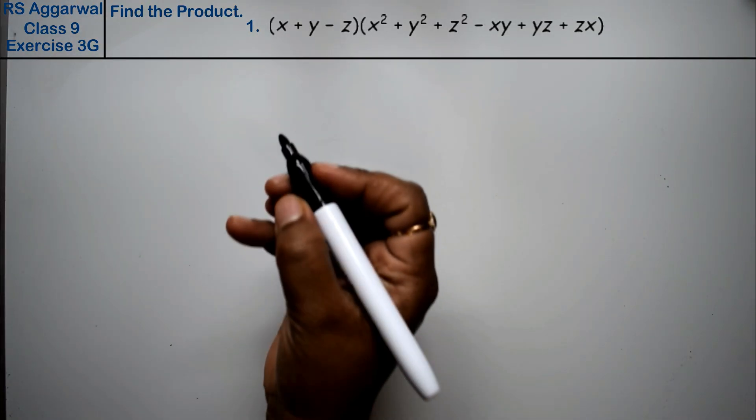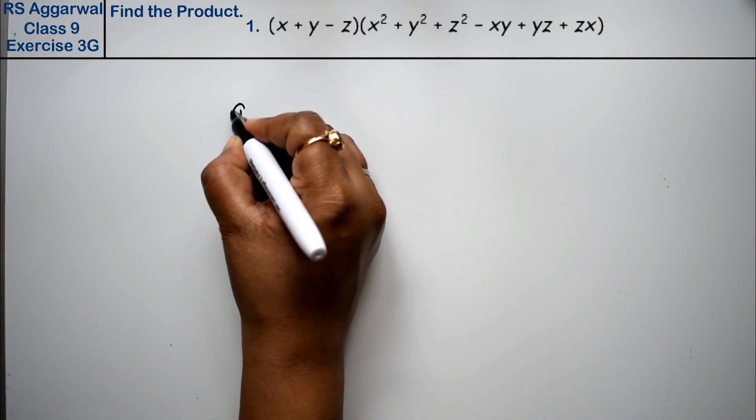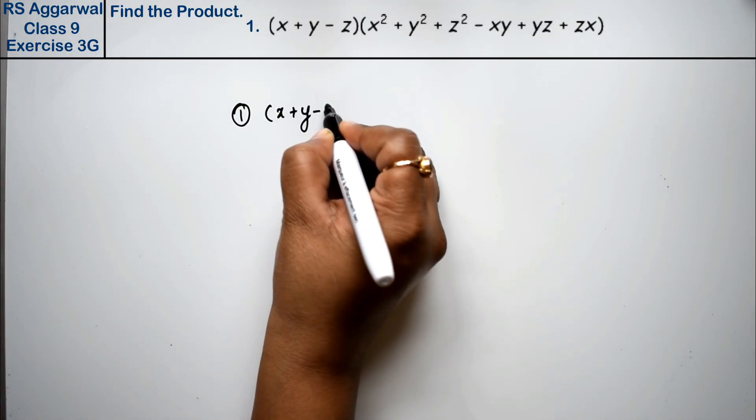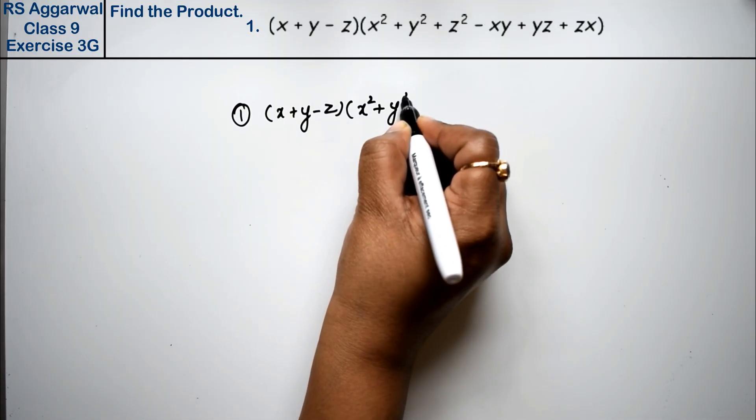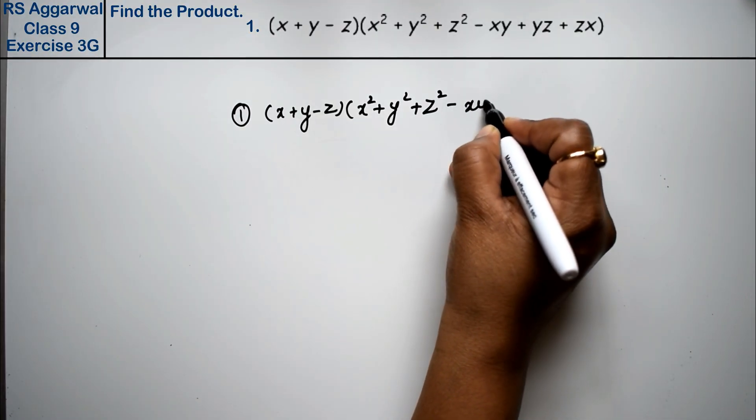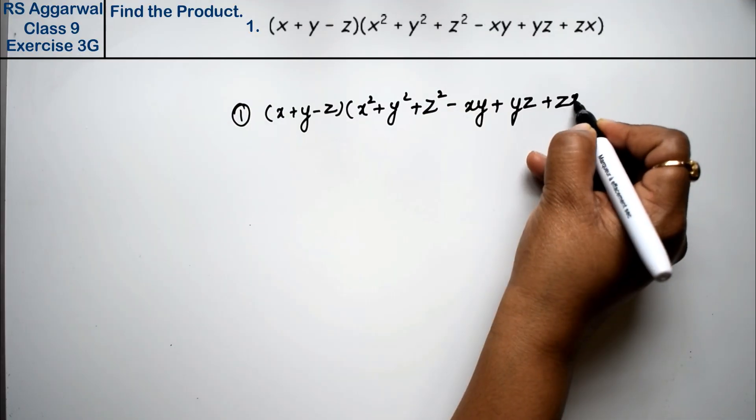Let's do question number first of exercise 3G, that is factorization of polynomial. Question number first is (x + y - z)(x² + y² + z² - xy + yz + zx), right friends?